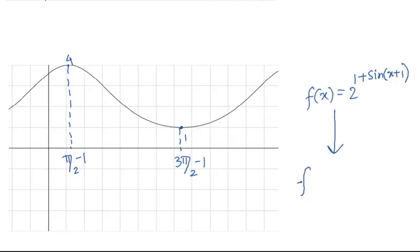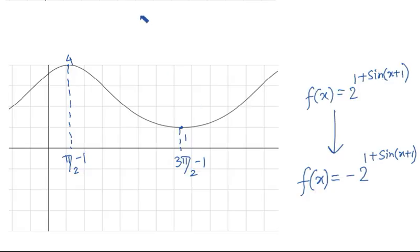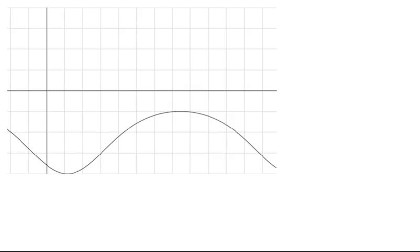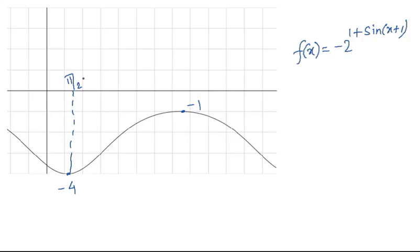Next, we multiply the function by -1, making it -2^(1 + sin(x+1)). When we multiply by -1, all y-values become negative: 4 becomes -4, and 1 becomes -1. So the graph is reflected about the x-axis. The value -4 is still achieved at x = π/2 - 1, and -1 is achieved at x = 3π/2 - 1.